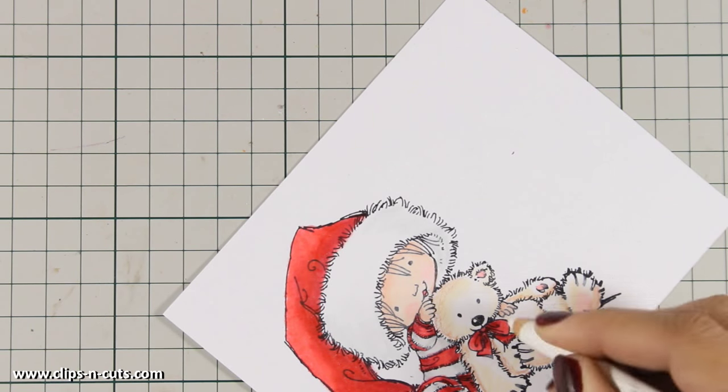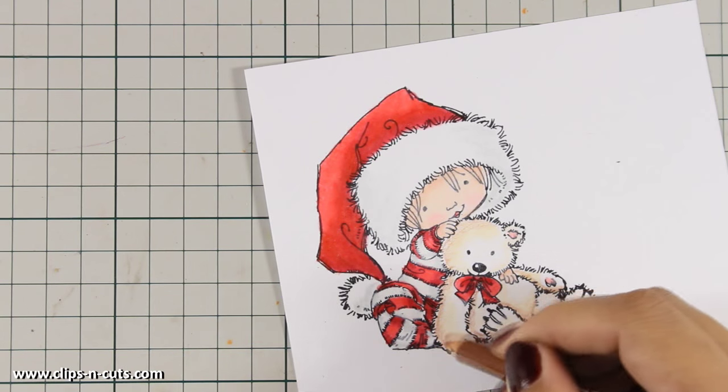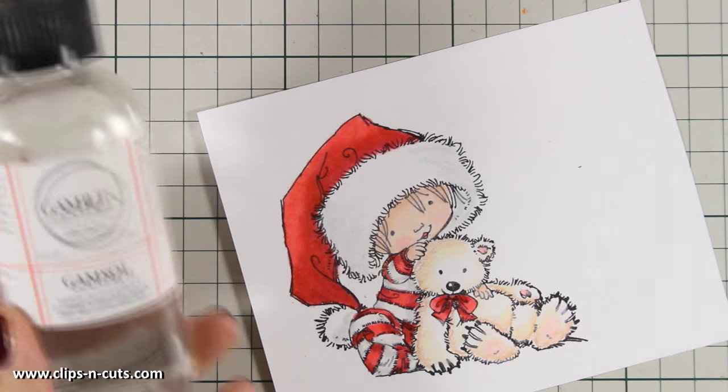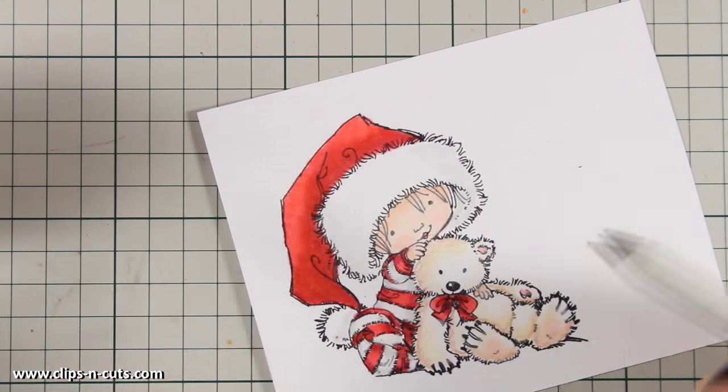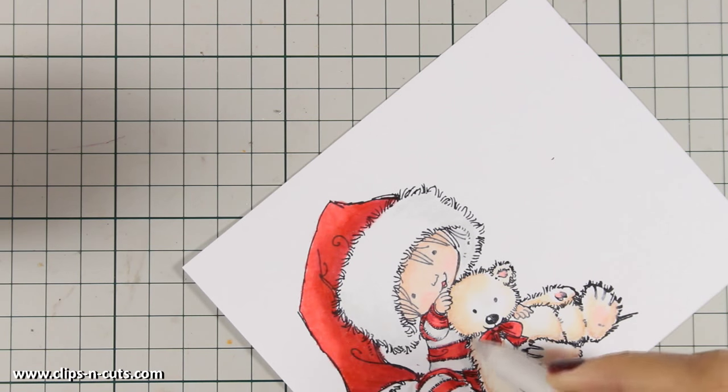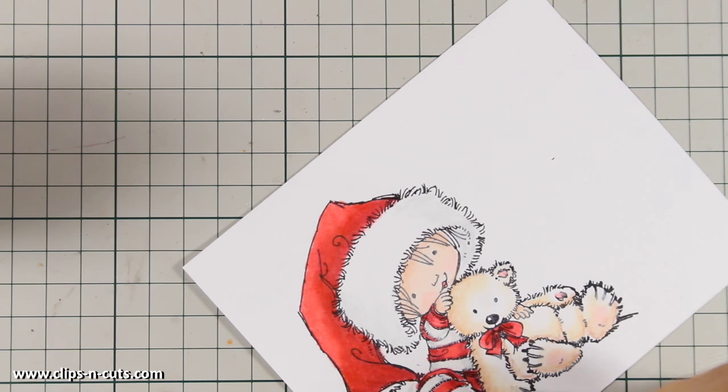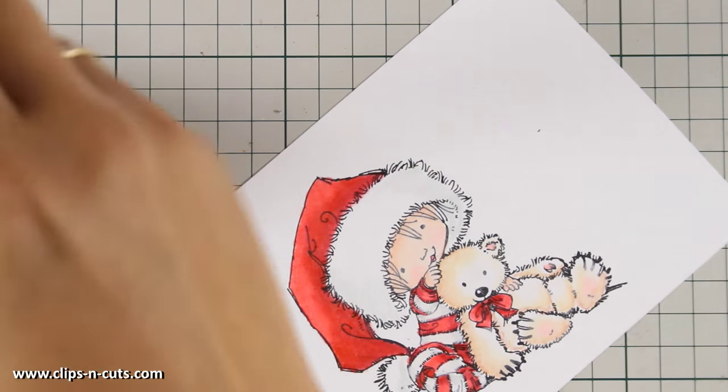Only for the bear, I am going to do the blending technique with gamsol, so I am just dipping my stub in the gamsol and I will blend out all the three colors that I have used for shading the little bear. Notice how I stay on the edges of the little bear and I don't touch at all the white area since I don't want to lose that light.